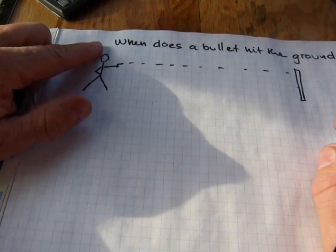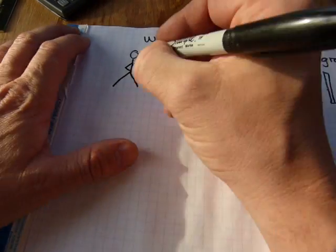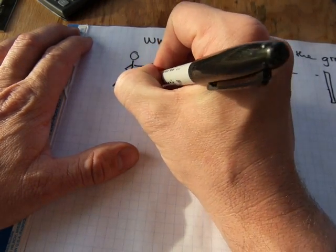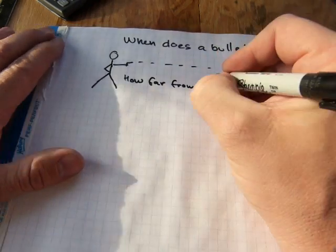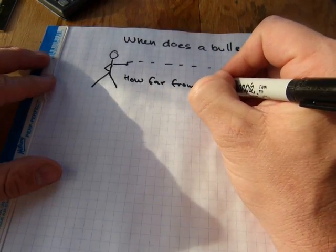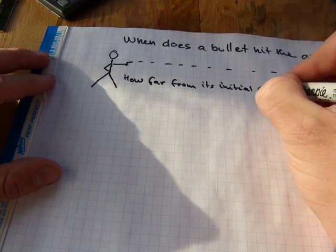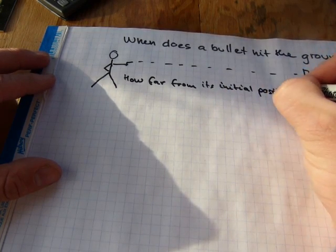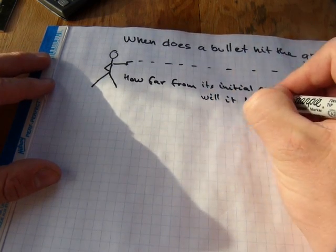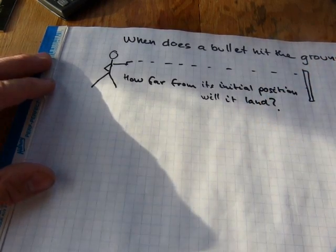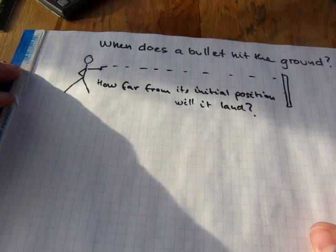So the question isn't when does a bullet hit the ground, but more like how far from you, how far from its initial position will it land. Because it will hit the ground, the question is how far away from you will it be.